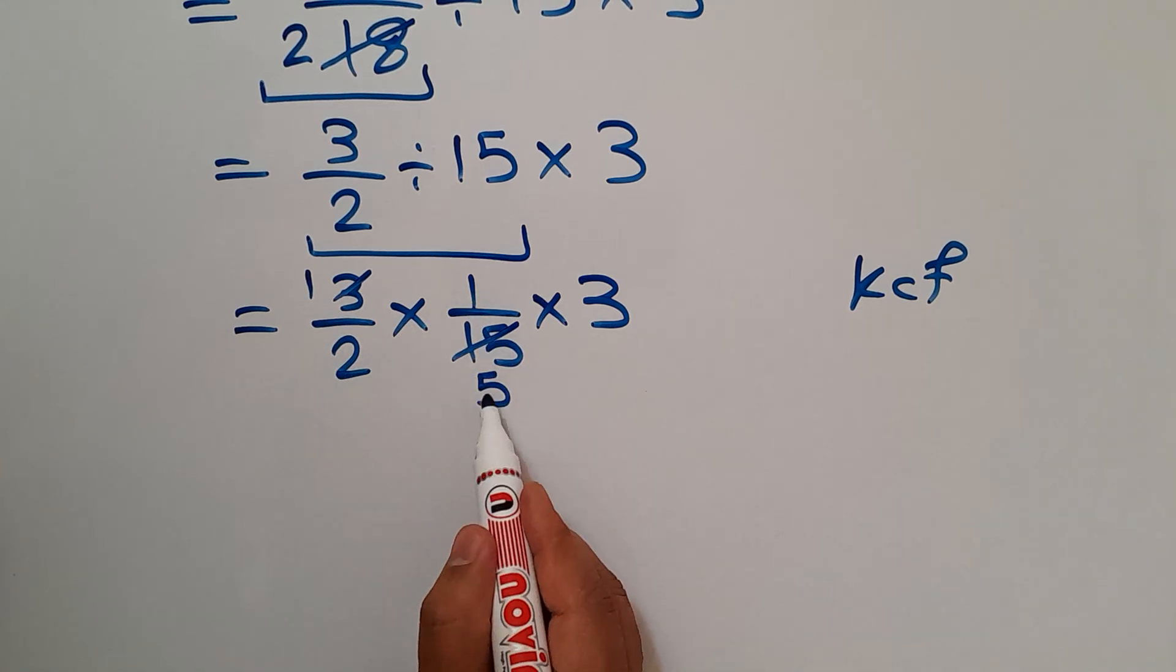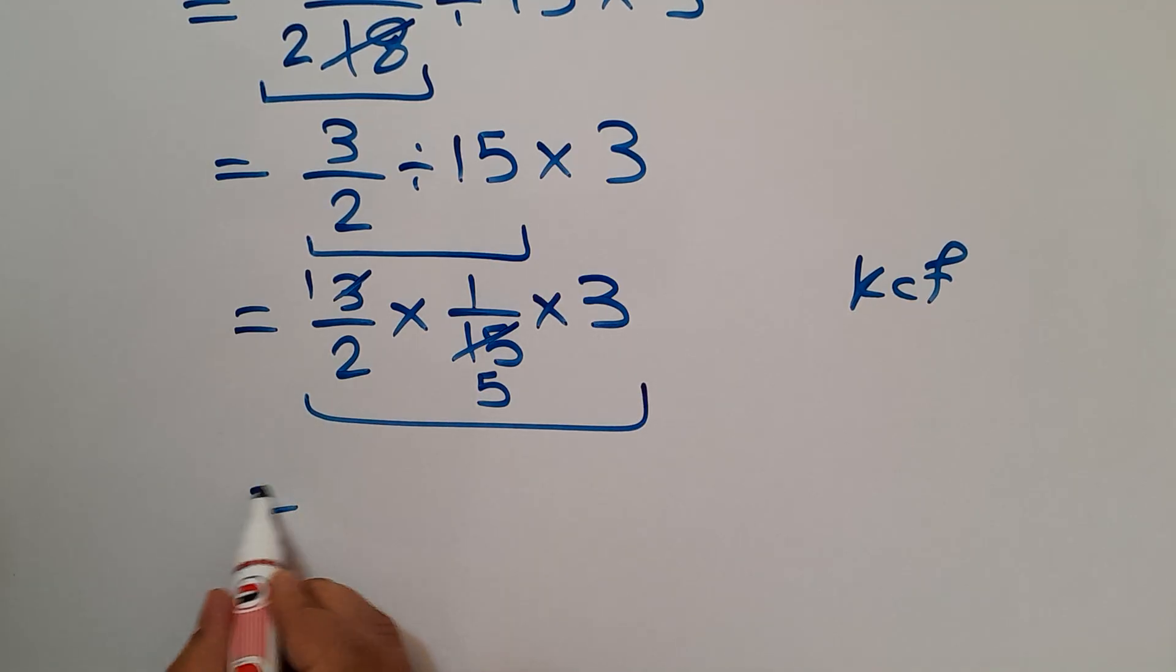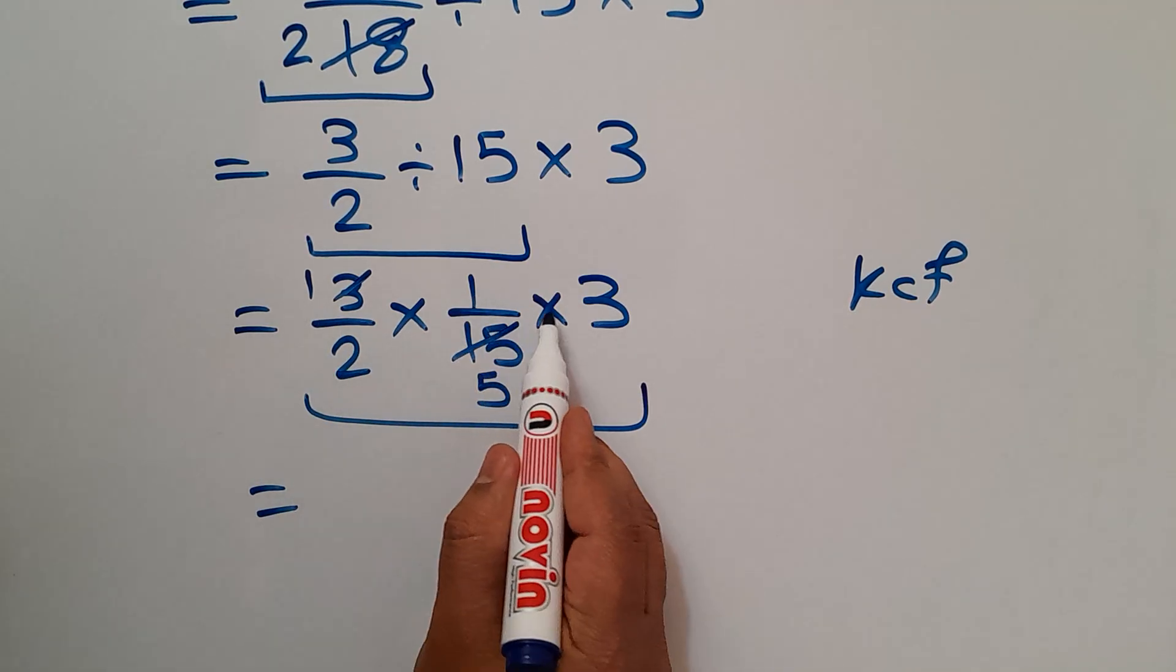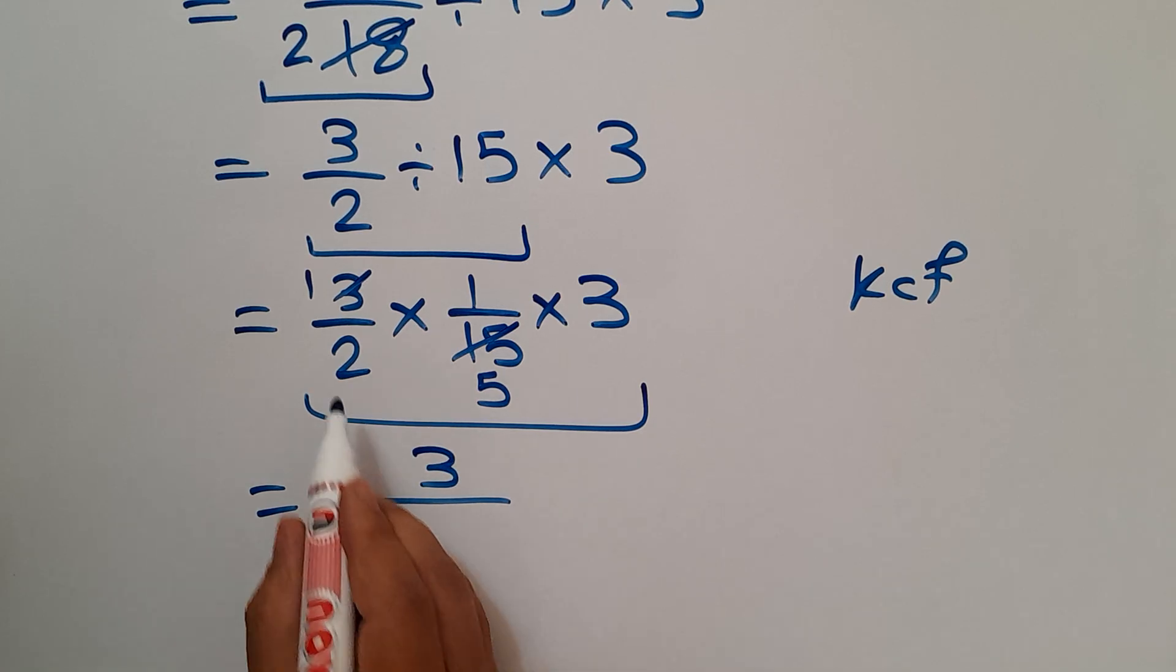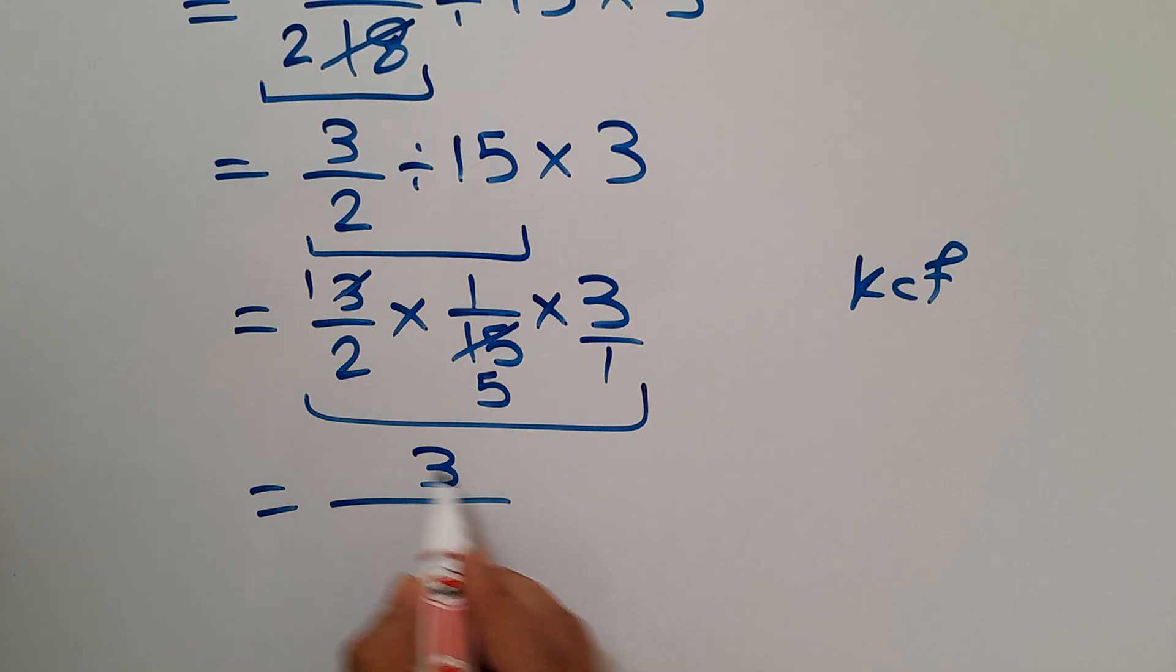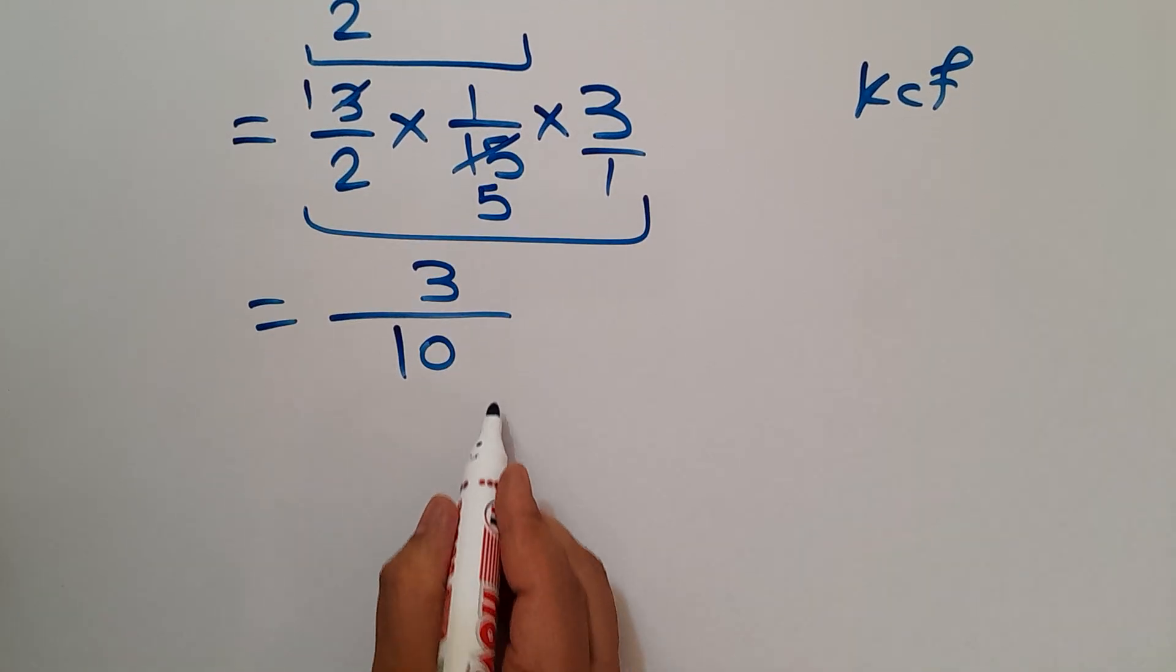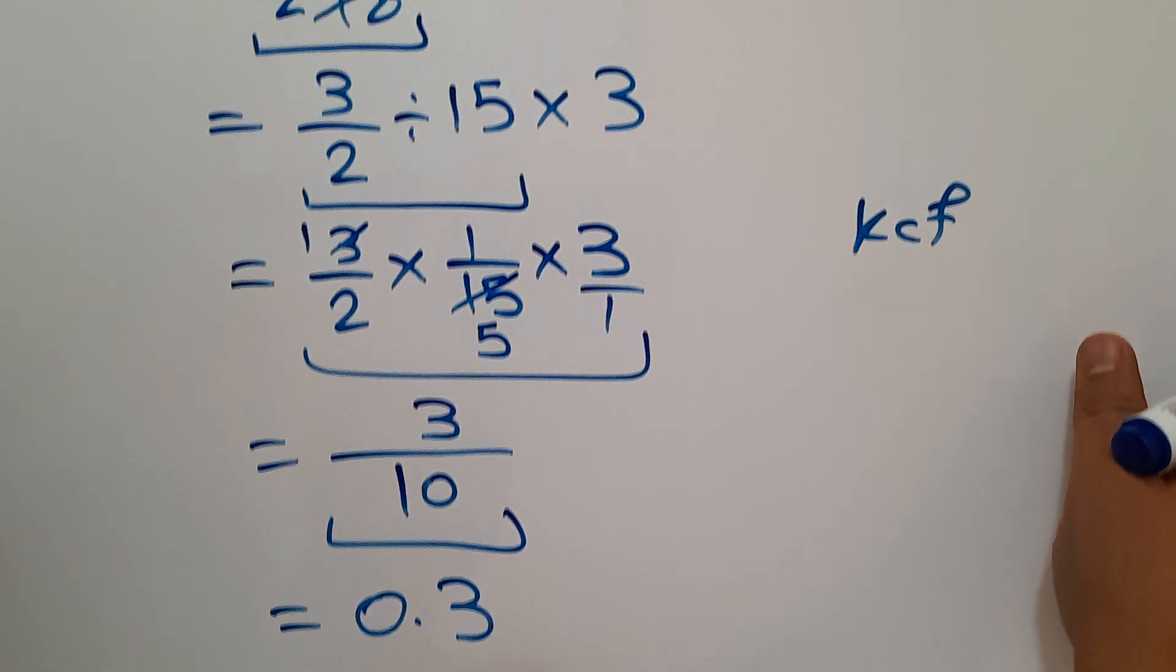And this is equal to 1 times 1 times 3 which equals 3 over 2 times 5 times 1 which equals 10. So we have 3 over 10 or 0.3. So our final answer to this problem is 0.3.